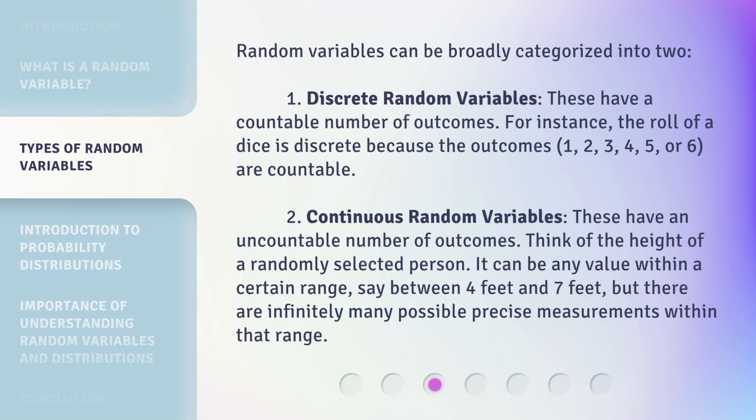Random variables can be broadly categorized into two. 1. Discrete Random Variables. These have a countable number of outcomes. For instance, the roll of a dice is discrete because the outcomes 1, 2, 3, 4, 5, or 6 are countable.